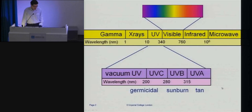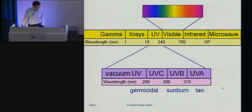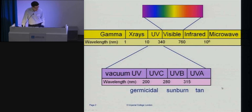UV — where does that fall on the electromagnetic spectrum? You can see it there on the top part of that slide. Typically we're talking about wavelengths in the range of about 150 up to 350 nanometers roughly. You'll probably hear the term germicidal used a few times today. Germicidal means wavelengths that are able to kill germs, as the word suggests.